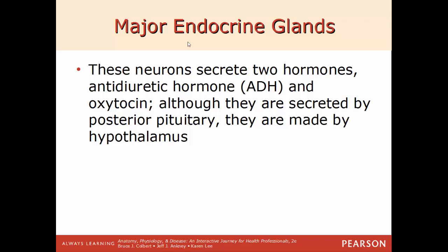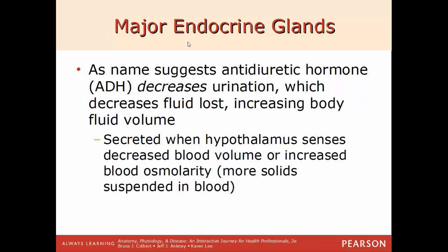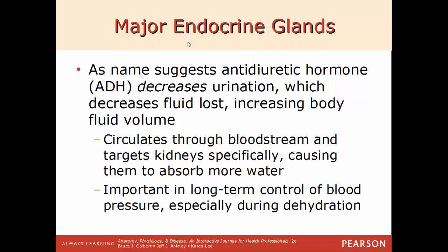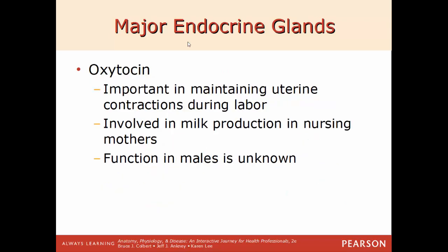The posterior lobe secretes two hormones: ADH (antidiuretic hormone) and oxytocin, both synthesized in the hypothalamus. As the name indicates, ADH decreases urination, which decreases fluid loss and increases body fluid volume. A diuretic makes you urinate more, so an antidiuretic makes you urinate less to save fluid. ADH is secreted when the hypothalamus senses decreased blood volume or increased blood osmolarity. It targets the kidneys, which are responsible for absorbing water and producing urine, and is important in long-term control of blood pressure to prevent dehydration.